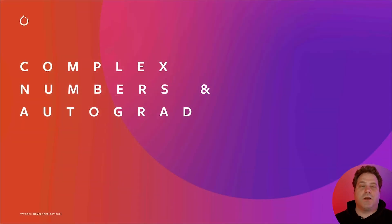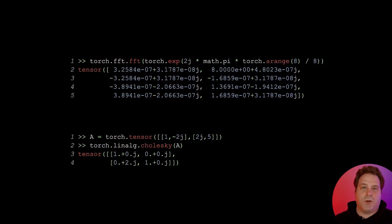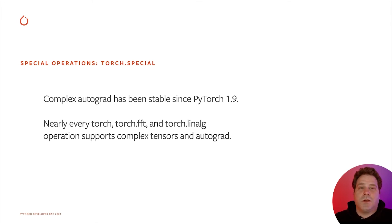Now let's switch from talking about modules to talking about a new data type: complex numbers. Complex numbers are fundamental to fast Fourier transforms and many linear algebra operations, and PyTorch now supports them as a native data type, just like it supports Float32. Complex Autograd, which allows for automatic differentiation and the optimization of complex neural networks, has been stable since PyTorch 1.9, and nearly every operation in the Torch, Torch.FFT, and Torch.Linalg modules supports complex tensor inputs and complex autograd.